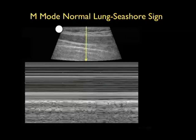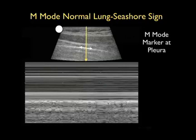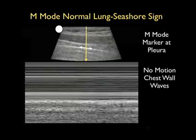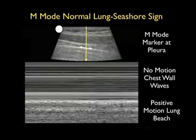A way to document that the lung is up to print out for the chart is to put M-mode. Generally what we do is locate it so the M-mode cursor is down right at the pleura. And what we see is the classic seashore sign or waves on the beach. If we look anteriorly, we'll see the classic waves or no motion of the chest wall, and below that, deep to the pleura, we'll see the positive motion of the lung making up the beach. So waves on the beach or the seashore sign in M-mode documents that the lung is up and that there's no pneumothorax.